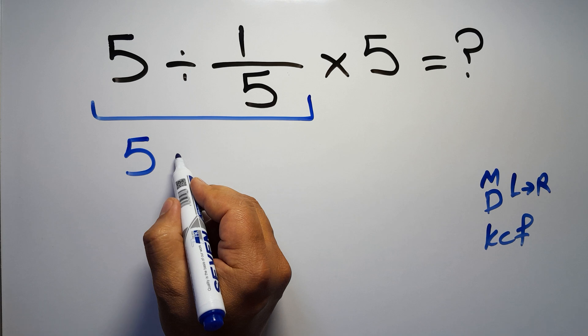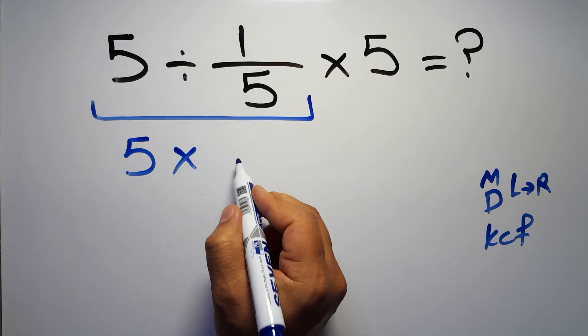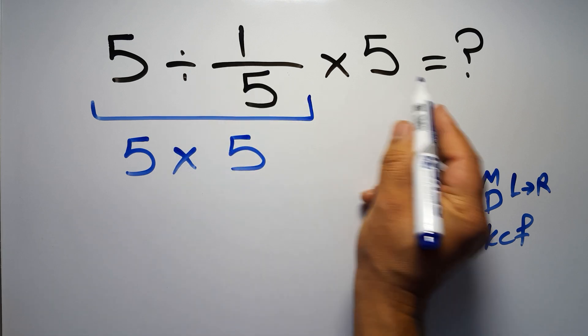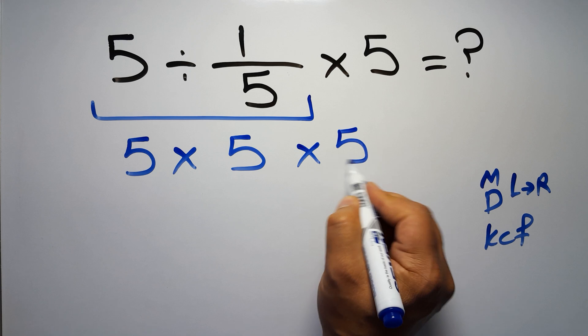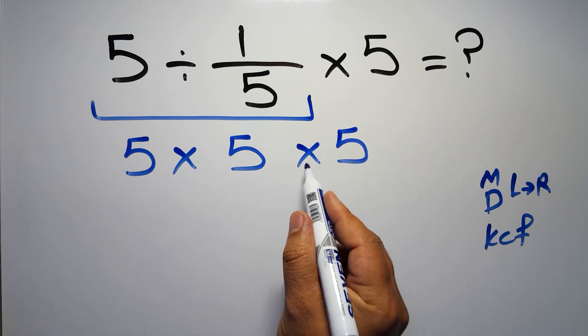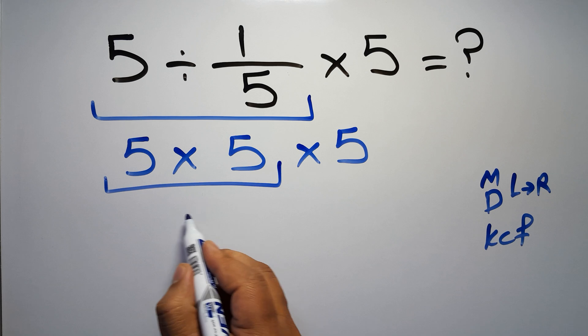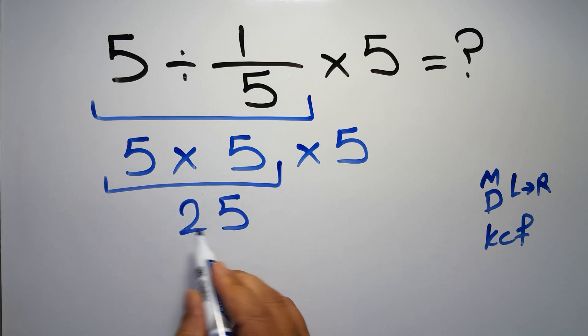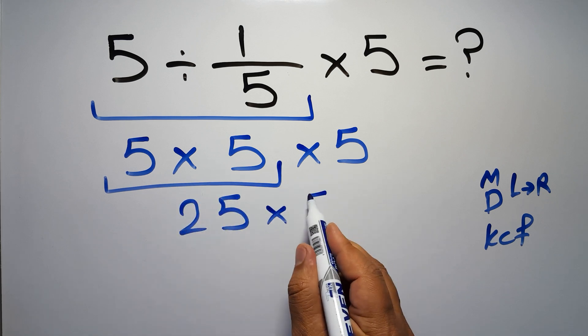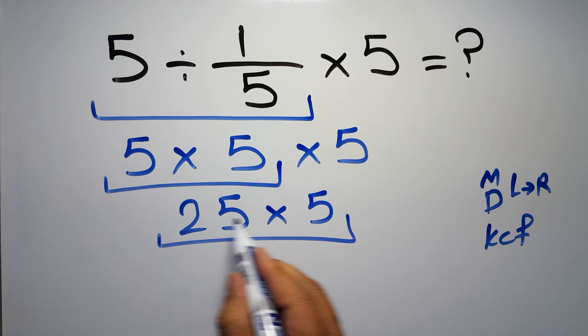change division to multiplication and flip the second fraction. And here we have times 5, so 5 times 5 times 5. 5 times 5 gives us 25, so 25 times 5.